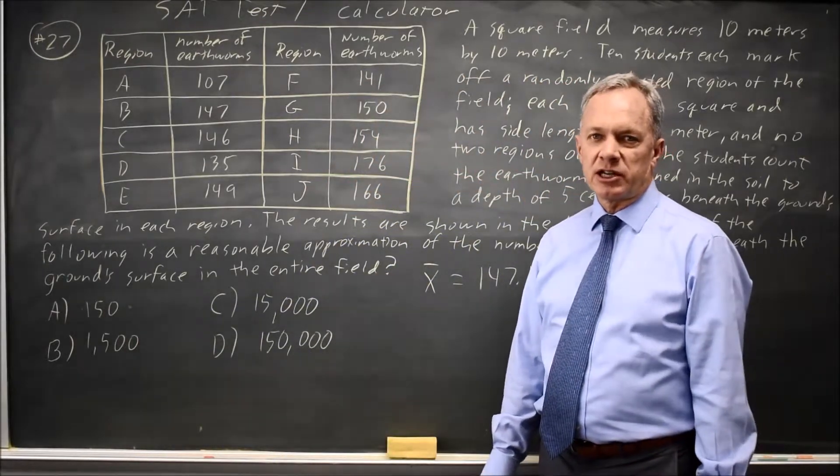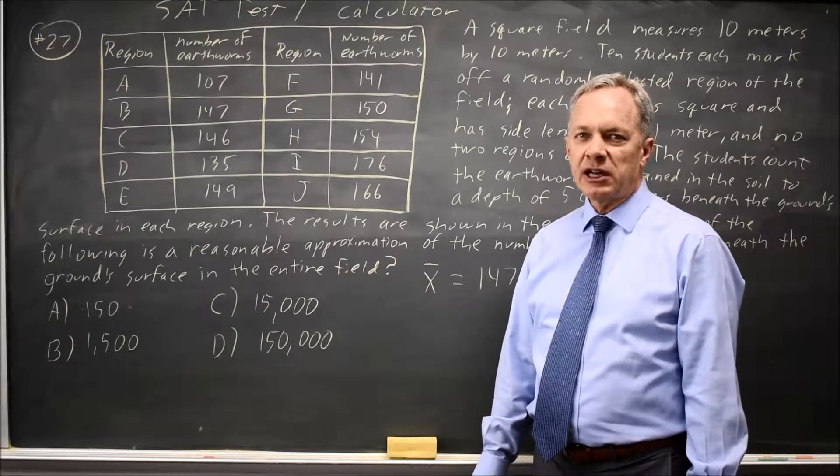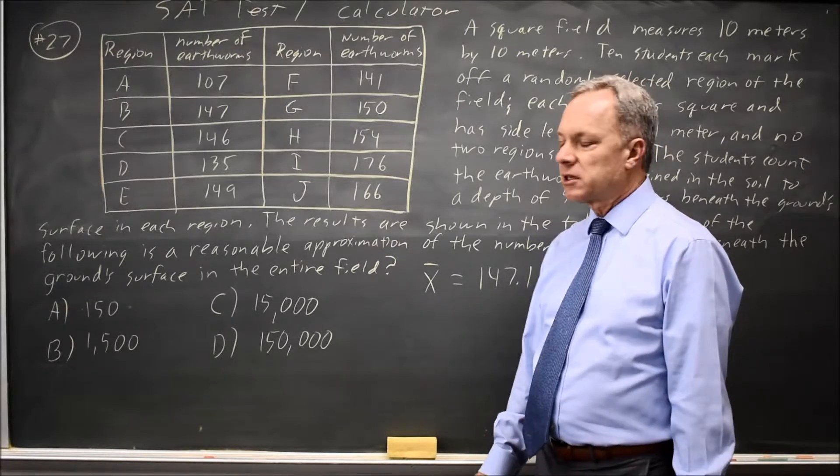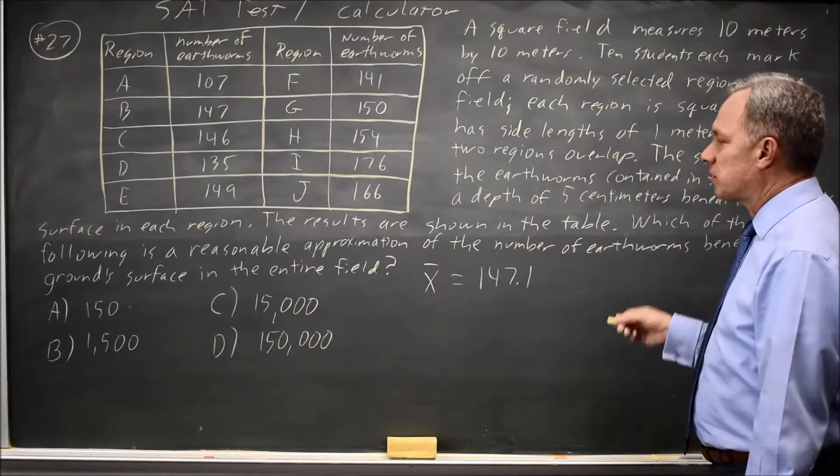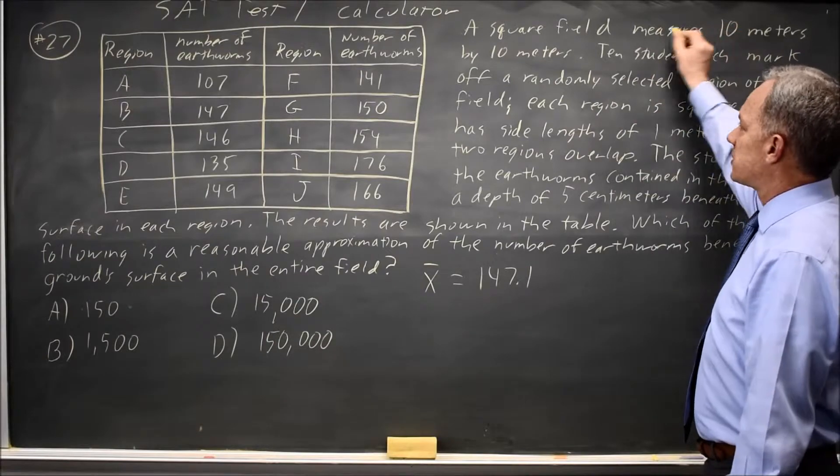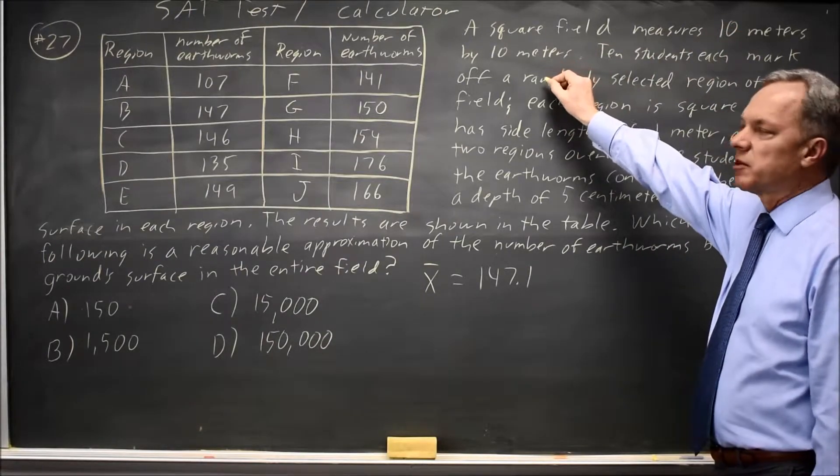but that is also not what they're asking. It's important to read the question carefully and answer the question that College Board is asking. They're asking for a reasonable approximation of the number of earthworms for the entire field. The entire field is 10 meters by 10 meters. That's 100 square meters.